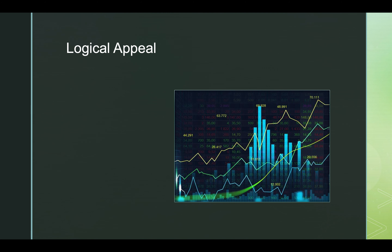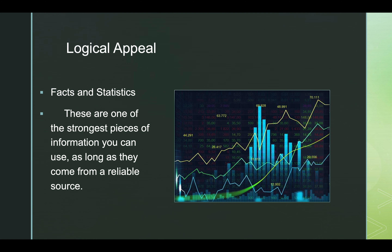So one of the first logical types of appeals are facts and statistics, and these tend to be very strong. There is a huge emphasis on numbers, on factual information, but you do need to make sure they're coming from a reliable source because people can play with numbers. If you've ever taken a statistics class, you can see how they can be manipulated to be a little misleading. So you just want to make sure that source is a good, credible source that's known for not doing sneaky things.